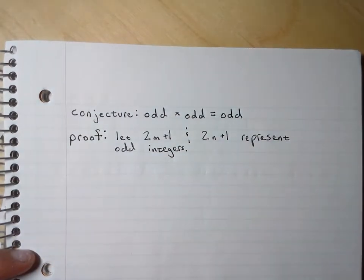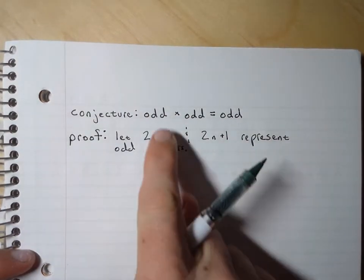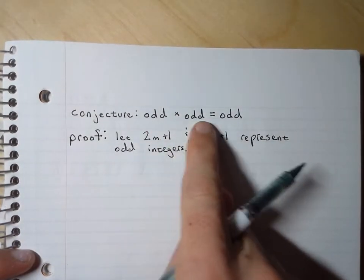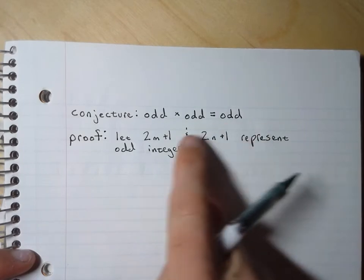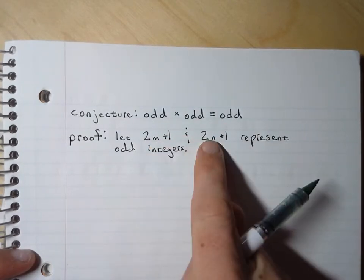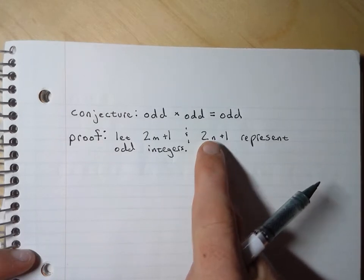So this is just the setup. If the conjecture is odd times odd equals odd, then I need to multiply two different odd numbers together and see if I can produce the form of a third odd number.